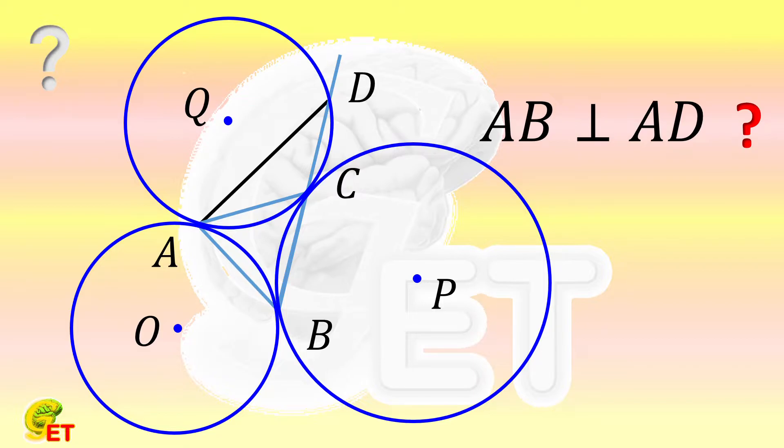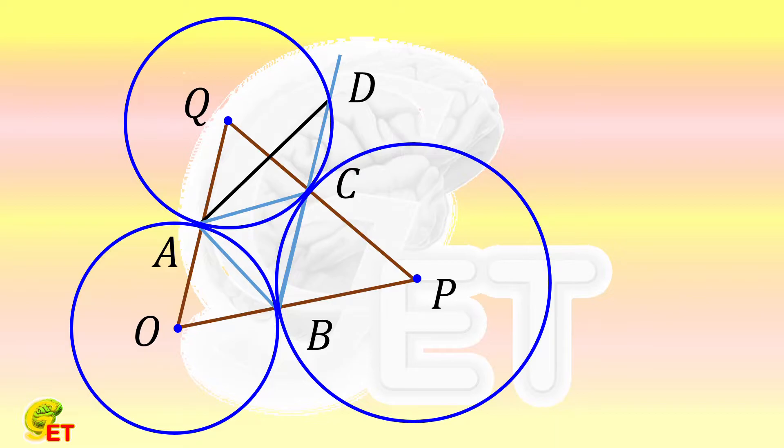Whenever facing this kind of problem that multiple circles are tangent to each other, we would first think of two kinds of auxiliary lines. In fact, we may even choose to plot them anyways, regardless of whether they are useful or not. The first kind is the line connecting the centers of the circles, and the other is the common tangent line between two circles.